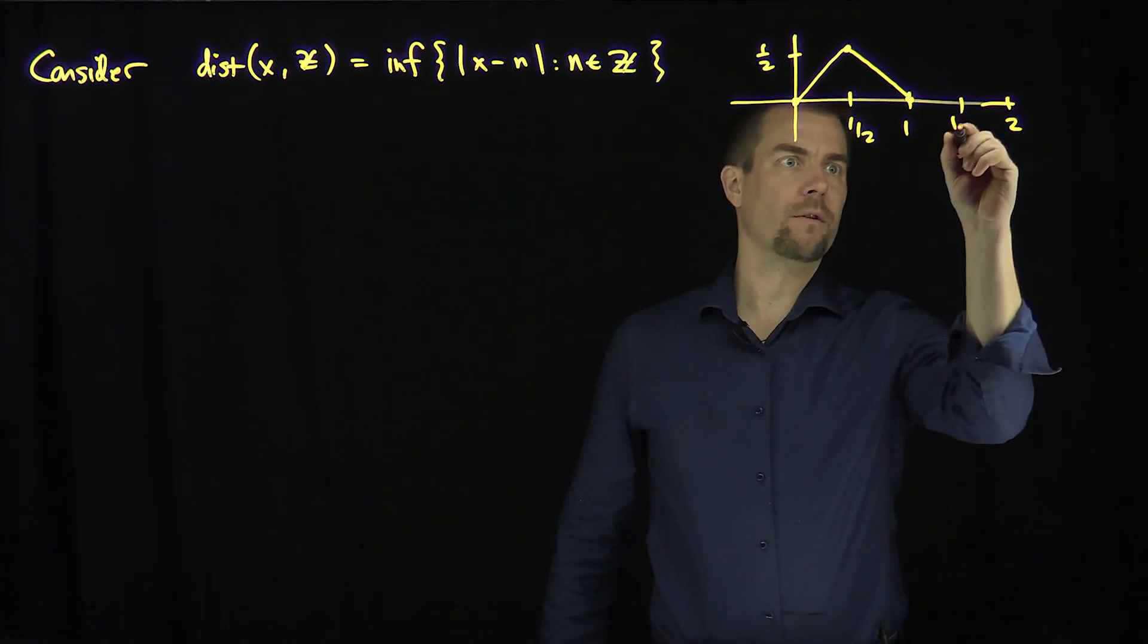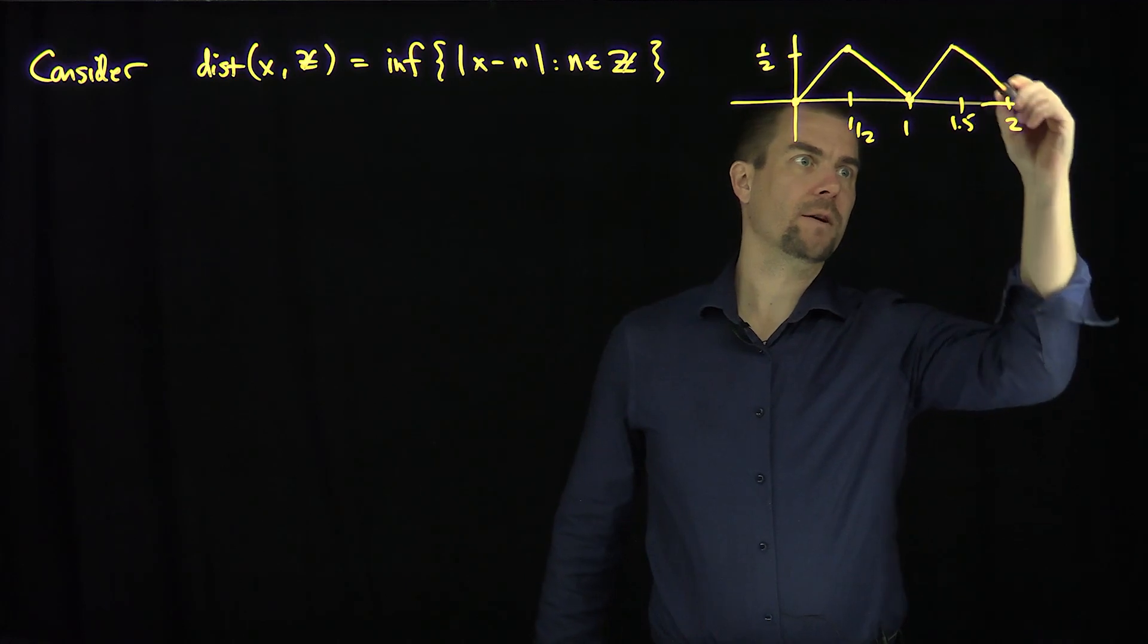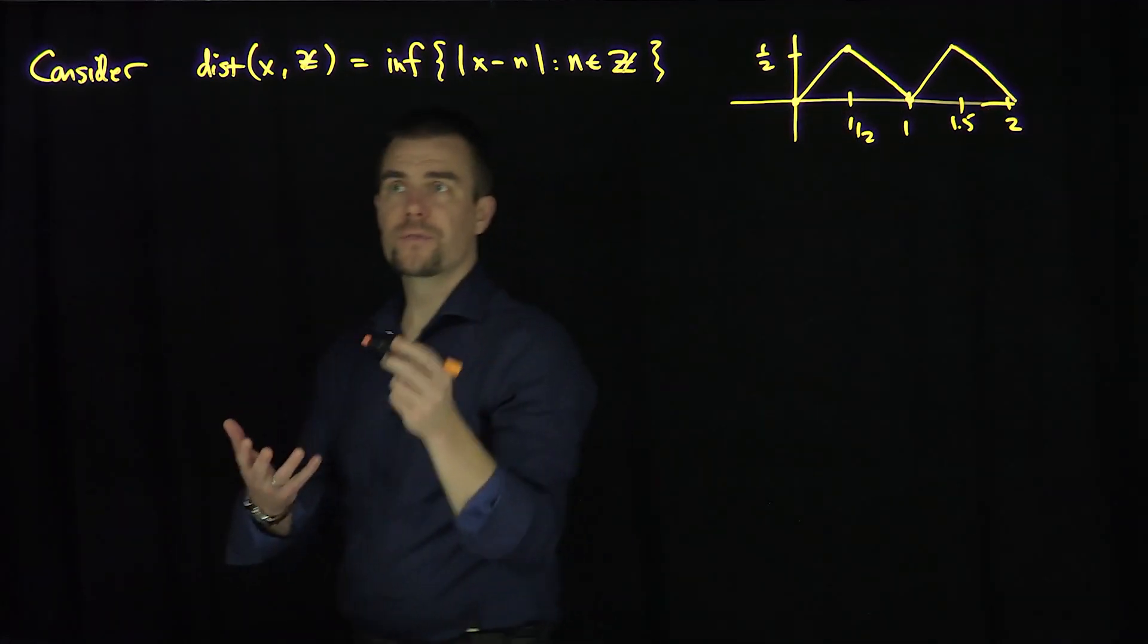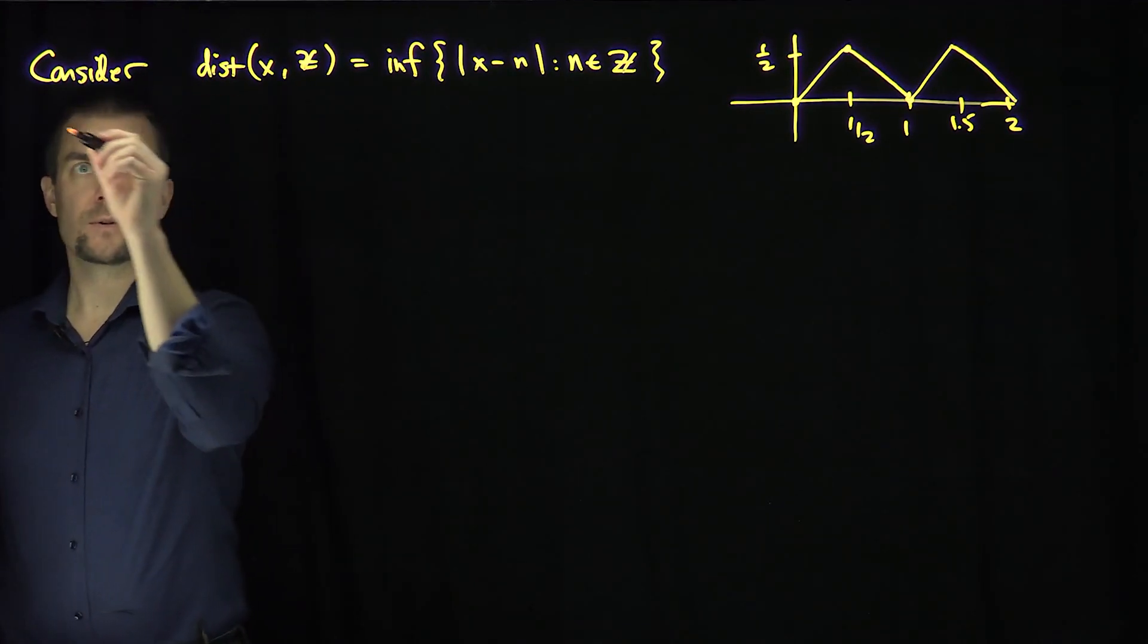So here's two and then here's 1.5 for example. It'll have the same exact behavior - up to one half, down to two. And so we see that this distance function is actually continuous.